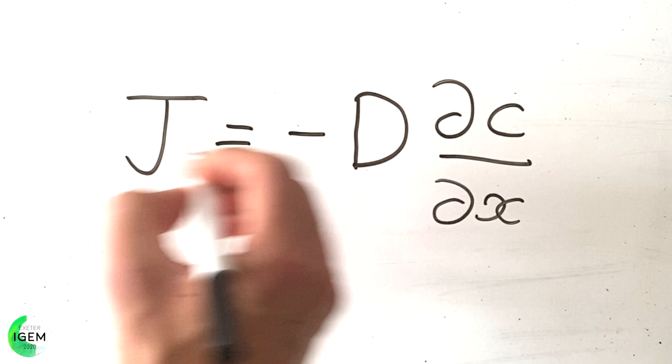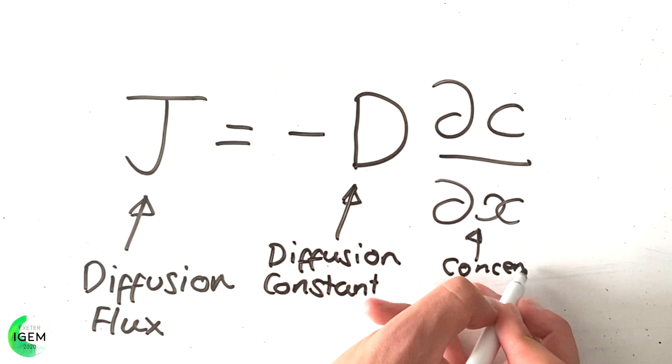This can be written as a differential equation, which is called Fick's first law. This says that the diffusion flux, or basically how many molecules move past a point, is proportional to the gradient in concentration.